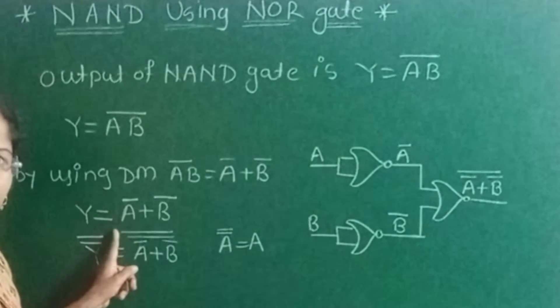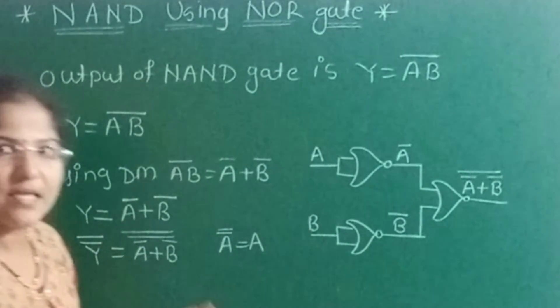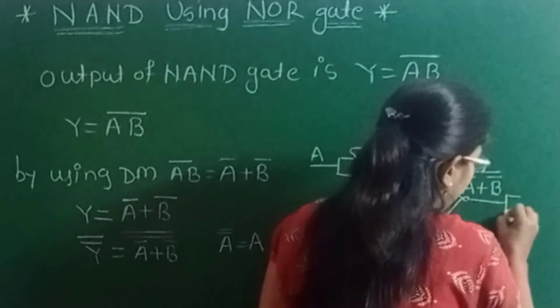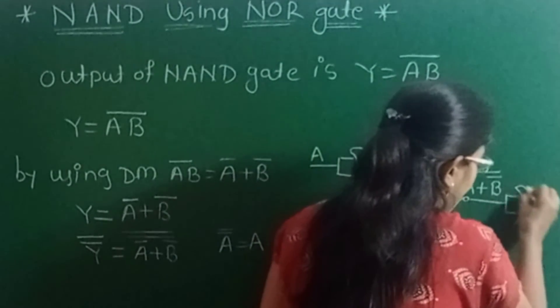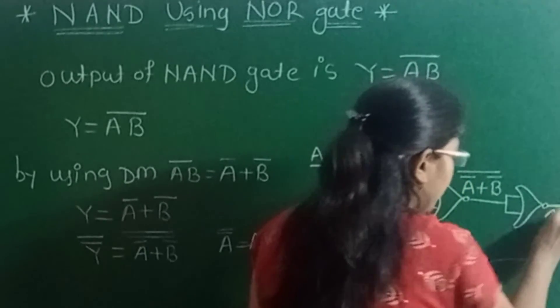Now one more complement is left. So to take the complement again, we have to use the NOR gate which will act as the inverter.